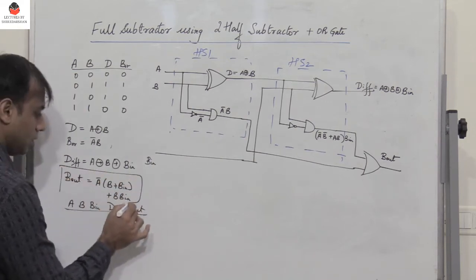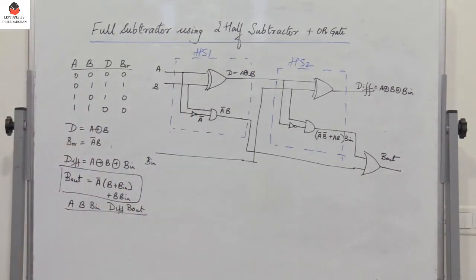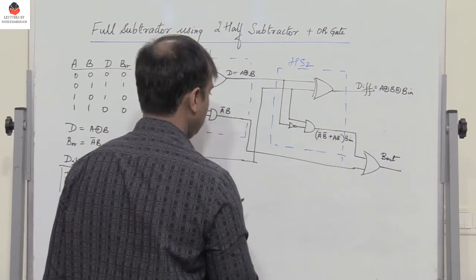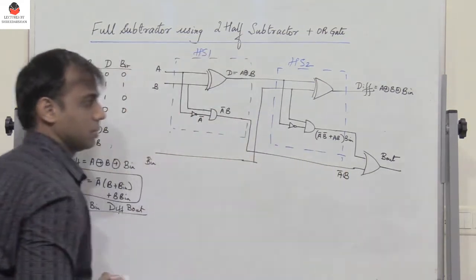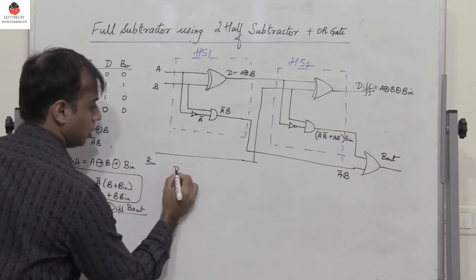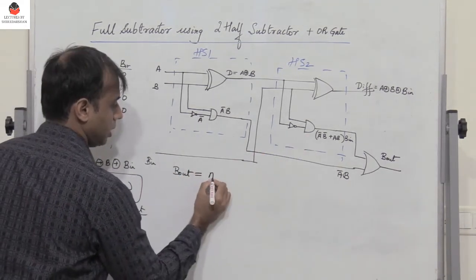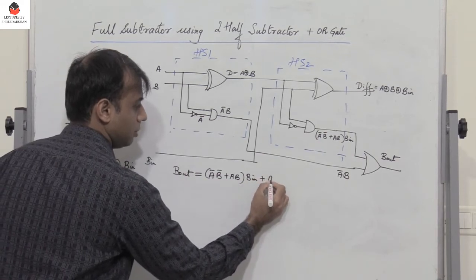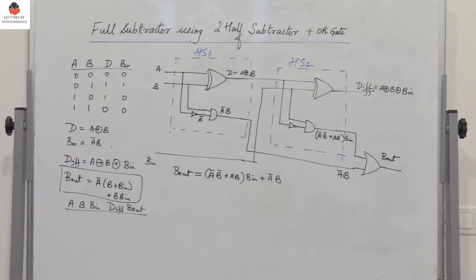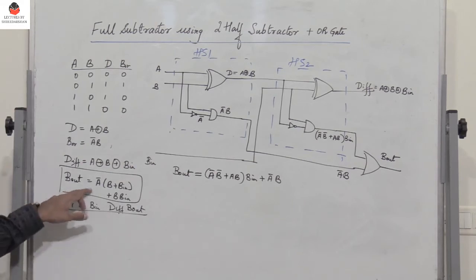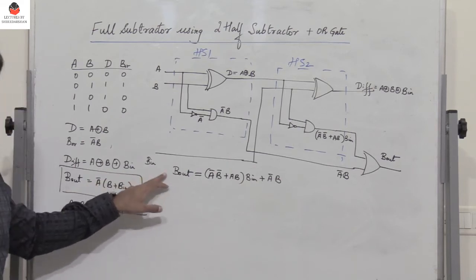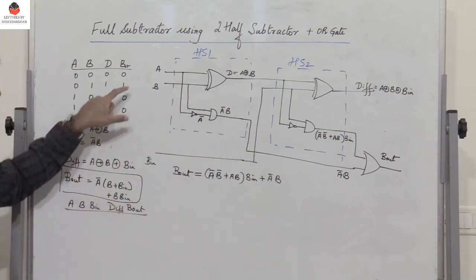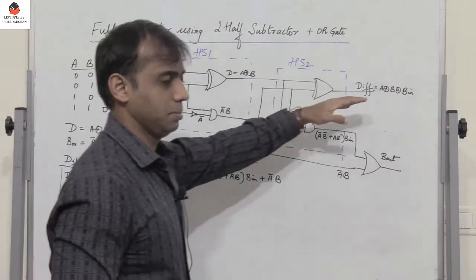Let's check if the expression we get here is equal to the expected one. Here I have (A̅B̅ + AB)·B_in ORed with A̅B. So borrow out is nothing but: (A̅B̅ + AB)·B_in + A̅B. This is the most simplified expression for B_out. For difference there is no problem since it's the XOR of three inputs. Now let's check if the borrow expressions are equal.